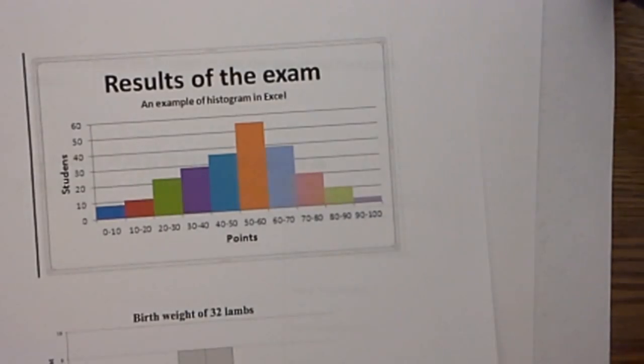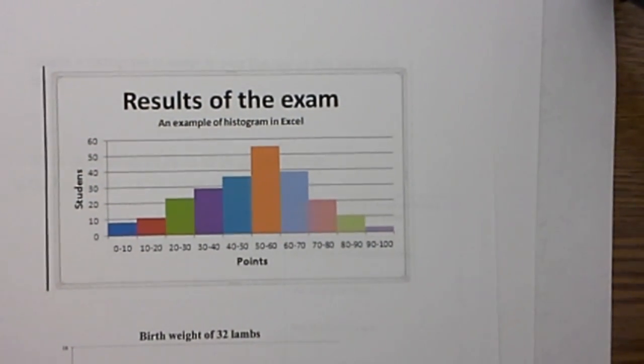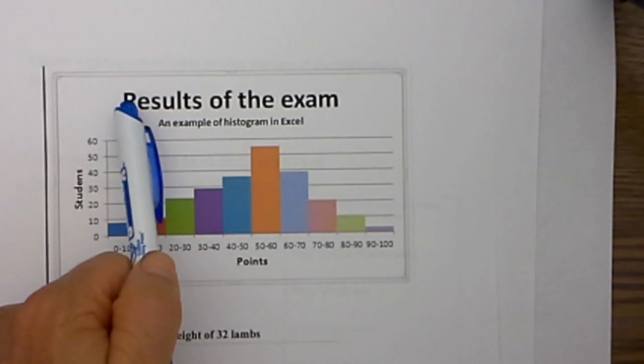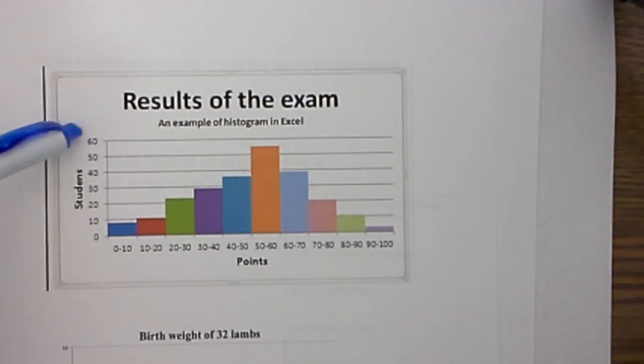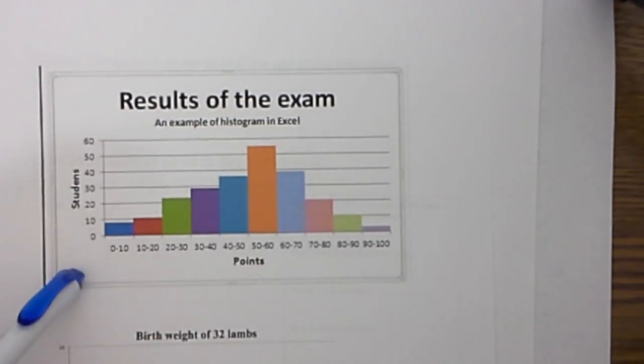Let's look at an example. Here would be an example of a histogram. Notice that it has a title, results of the exam, the y and x axis are labeled, the bars are touching, and you have the intervals here.